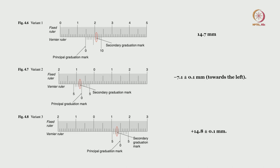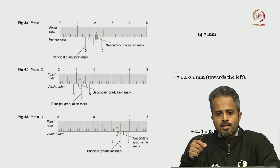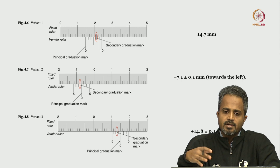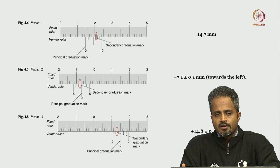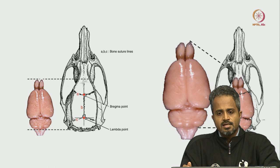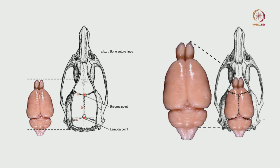You will get coordinates from the atlas directly or from literature that has used a similar target. There are two sources: one is literature that has used a similar target for their experiments — but ensure that the species and body weight of your rat matches those used in that study, because as body weight and species change, there can be minor variations in the coordinates and the relations of targets with other brain structures. All atlases are developed by making serial sections. One atlas I can recommend, which is used most commonly, is the Paxinos and Watson atlas.